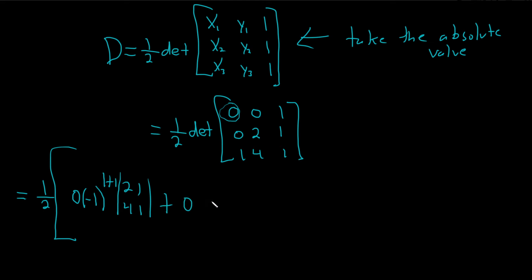Plus 0. Now it doesn't matter what goes here because it's going to go away, but I'll write it, negative 1, row plus column, so first row, second column, so 1 plus 2, cross out the first row and second column, and you're left with 0, 1, 1, 1, 0, 1, 1, 1, again, cross that out, cross that out, you have 0, 1, 1, 1.